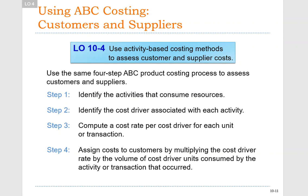We will use the same four steps in activity-based costing to assess both customers and suppliers. Step one: identify the activities that consume resources. Step two: identify a cost driver associated with each activity. Step three: compute a cost or activity rate for each unit of transaction. Step four: assign cost to customers by multiplying our cost driver by the volume of cost driver units consumed by a particular activity or transaction.